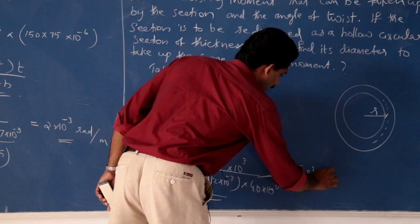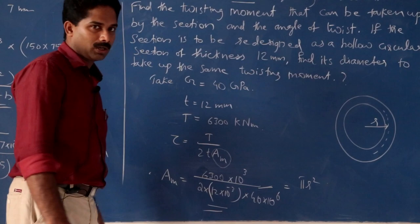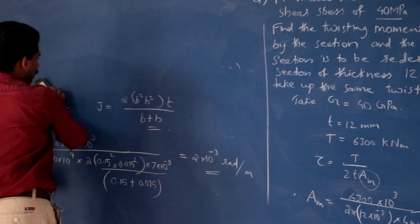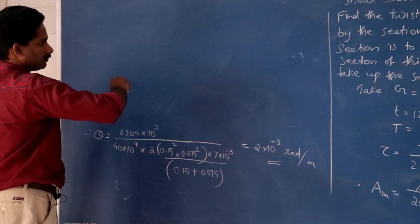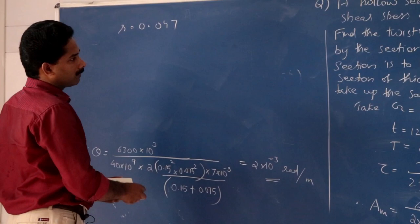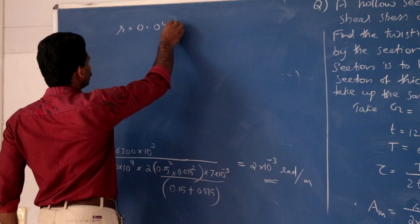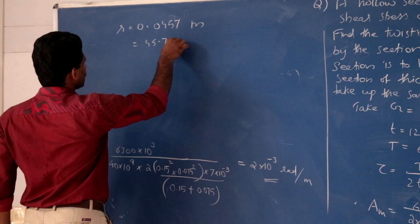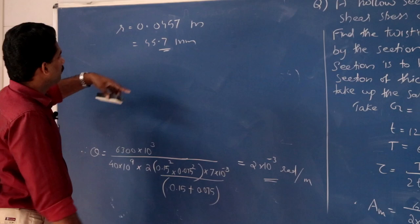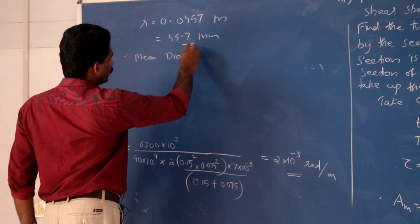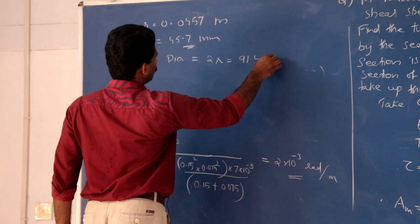If r is the radius of the median line, then mean area is pi r squared. Solve this equation — we have only one unknown, that is small r. The mean radius will be 0.0457 meters, that is 45.7 millimeter. This is the mean radius. Therefore, mean diameter is equal to 91.4 millimeter.